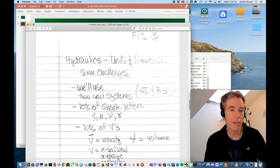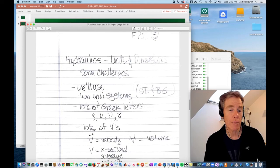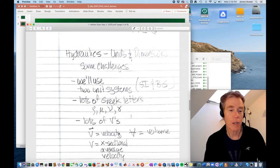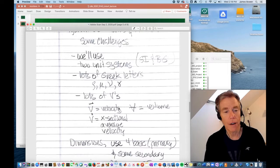Next topic to cover in hydraulics are units and dimensions. There are some challenges. We are going to use two unit systems, the SI unit system and the BG, British Gravitational System. There are lots of Greek letters that we'll use. Rho, we use for density. Mu, we use for dynamic viscosity. Nu, we use for kinematic viscosity.